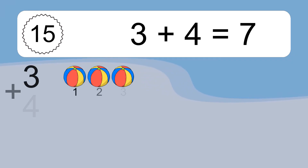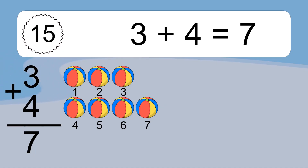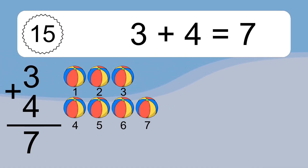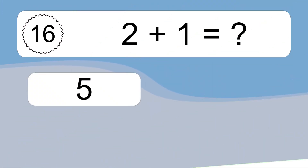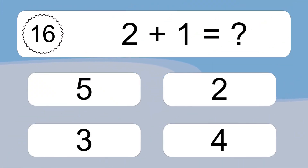3 plus 4 equals what? 3 plus 4 equals 7. Let's count it. 1, 2, 3, 4, 5, 6, 7.